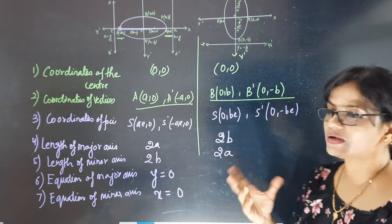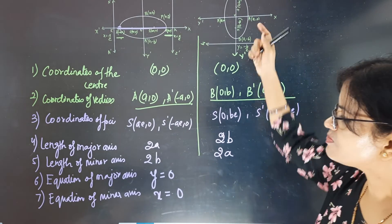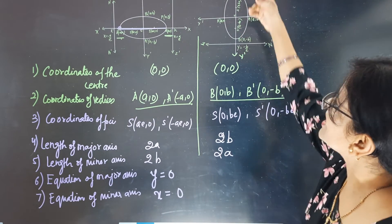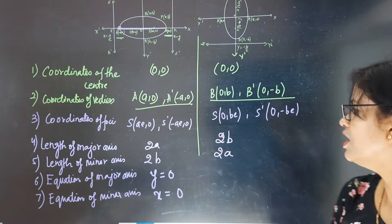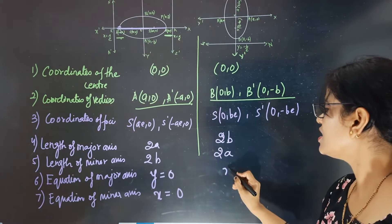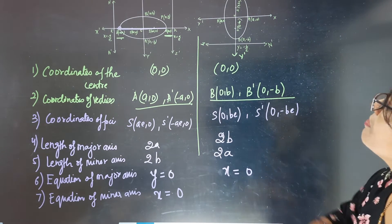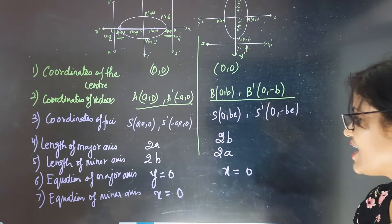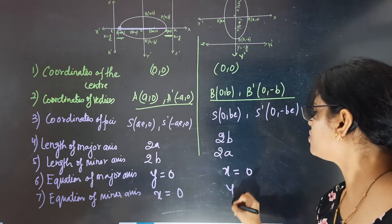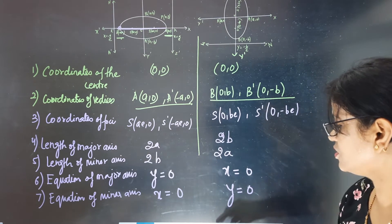For the ellipse with major axis on the y-axis, it is exactly opposite: equation of major axis is x = 0, and equation of minor axis is y = 0.